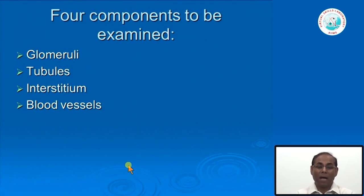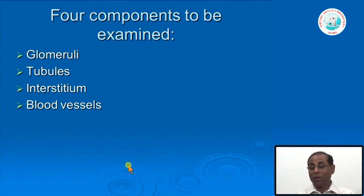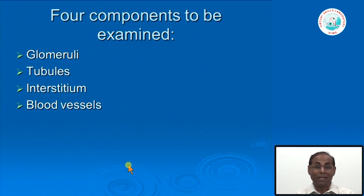When we see kidney biopsies under the microscope, we try to see changes in four compartments—glomerular compartment, tubules, interstitium, and blood vessels—and then try to conclude which component of the glomerulus or kidney is involved. Many diseases can involve the blood vessels primarily and thereby involve the kidney. If we look at all four compartments separately, our detection of abnormalities is much better.